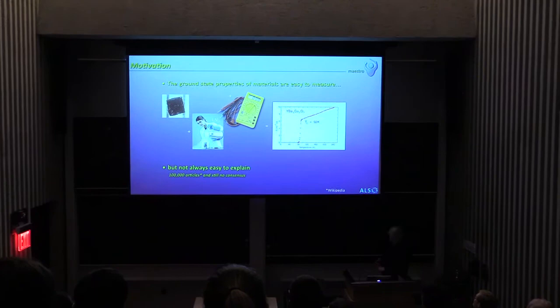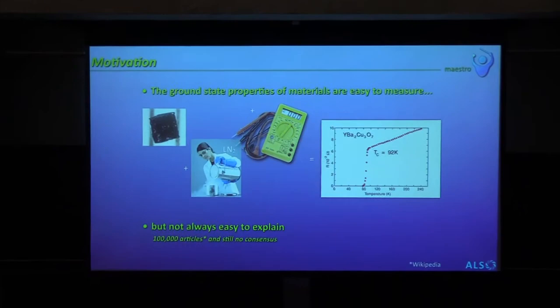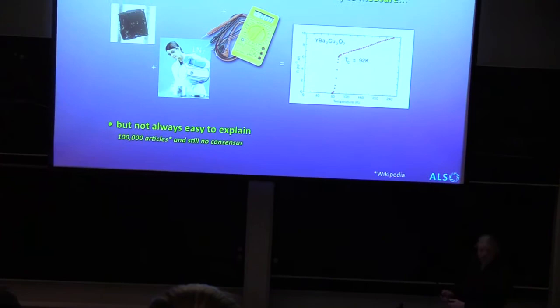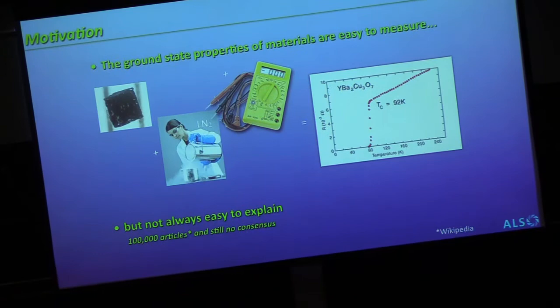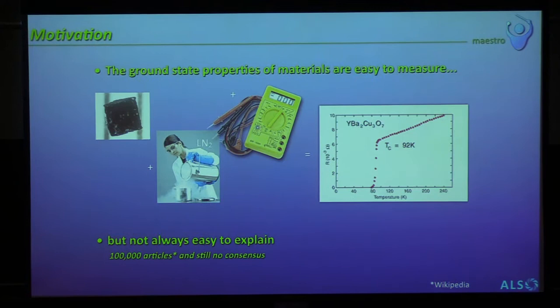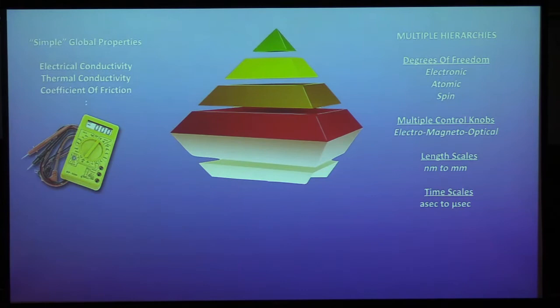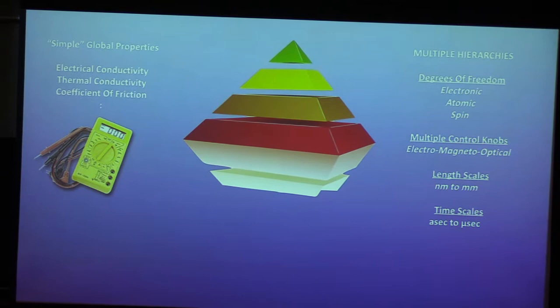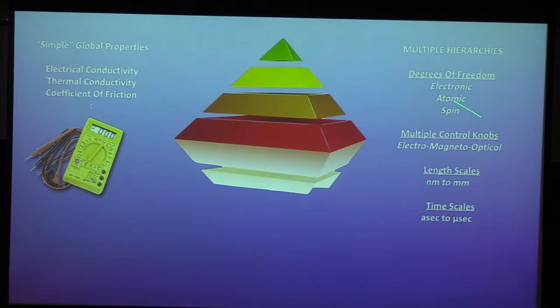The motivation for this area that I'm interested in is to understand the ground properties of complex materials. Many times these ground state properties can be very easy to measure, but this is properties integrated over a very complicated sample. So the explanation is not always easy. And high-Tc superconductors are a great example. It's probably by now 200,000 articles on them, and still there's not a consensus on how they work.